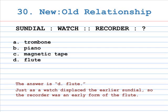Number 30: new is to old relationship. Sundial is to watch, as recorder is to A. Trombone, B. Piano, C. Magnetic tape, D. Flute. The answer is D, Flute. Just as a watch displaced the earlier sundial, so the recorder was an early form of flute. This sort of analogy relationship is pretty common on the MAT. Similarly, a lute was an early form of guitar. Likewise, the Office of Strategic Services (OSS) during the Second World War was a precursor to the CIA.